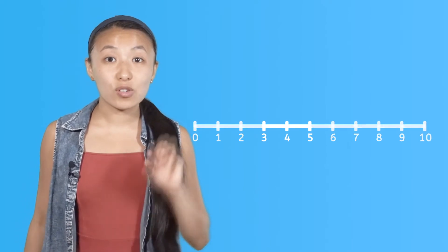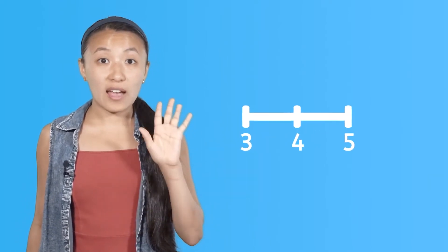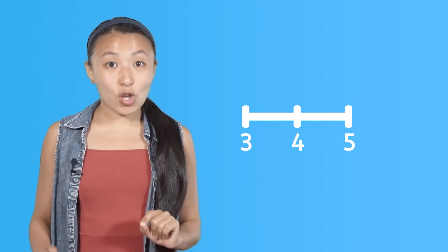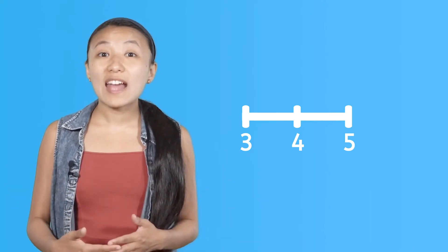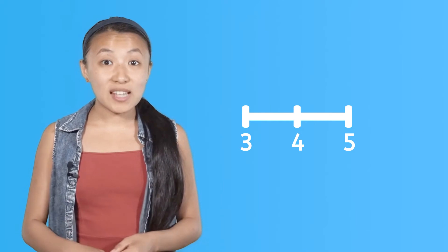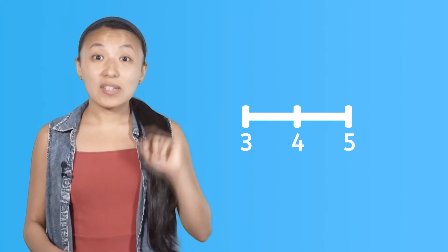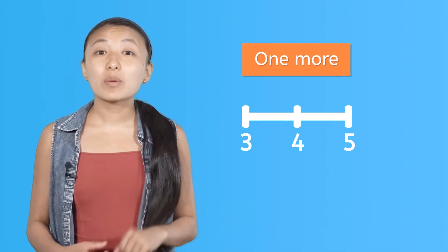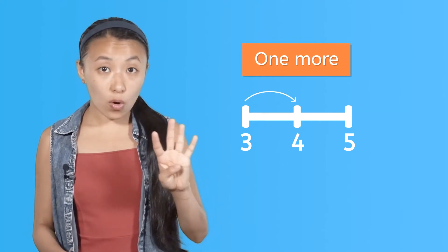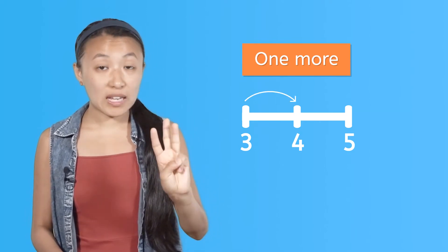When we count forwards and backwards, there is a pattern in how the numbers change. We're going to focus on the numbers three, four, and five. Each number we say when counting up is one more than the number before it. That means four is one more than three, and five is one more than four.